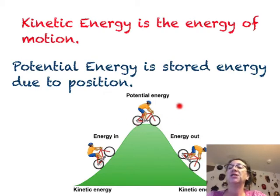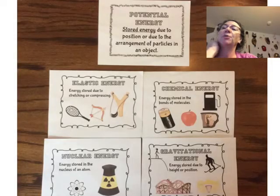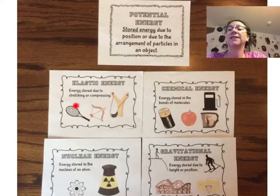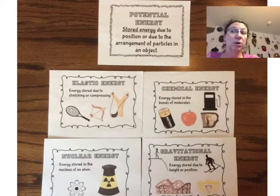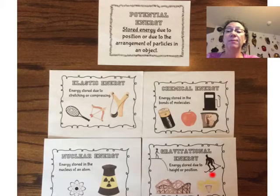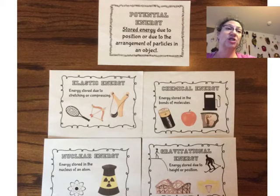We also have potential energy. The biker at the top of the mountain has energy stored from its position. And just a reminder, there are many types of potential energy. We have elastic energy, which is energy stored due to stretching or compressing. Chemical energy, which can be food, battery, or gasoline — it's energy stored in the chemical bonds. We also have nuclear energy, which is stored inside the nucleus of atoms. And gravitational energy is due to position — the higher up, the more potential gravitational energy it has; the lower, the less potential energy it has.